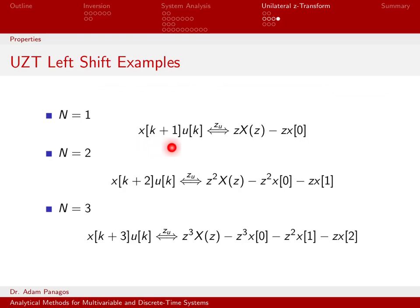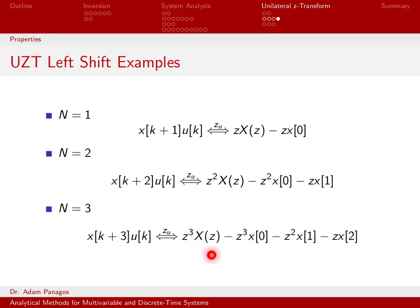When n equals 1, x of k plus 1 in the Z-domain looks like this: our original Z-transform times z to the 1, minus z times x of 0. For n equals 2, I end up with X(z) times z squared and then two terms to account for the two values that have shifted out: k equals 0 shifted to the left 2 gives x(0), and x(1) shifted left sits at time minus 1. And for n equals 3, I have X(z) times z cubed and three terms to account for the three things shifted out of positive time.